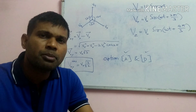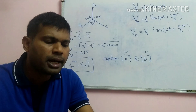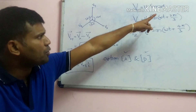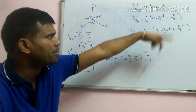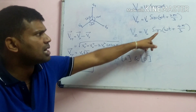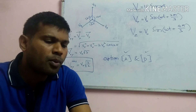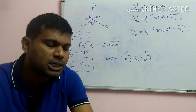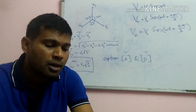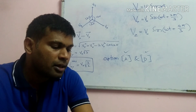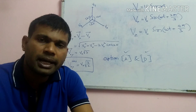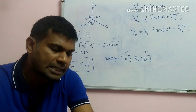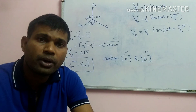Question number 9: the instantaneous voltages at three terminals X, Y, and Z are given as: Vx = V₀ sin(ωt), Vy = V₀ sin(ωt + 2π/3), Vz = V₀ sin(ωt + 4π/3). An ideal voltmeter reads RMS potential difference between its terminals. It is connected between X and Y, then between Y and Z. We need to find the readings.